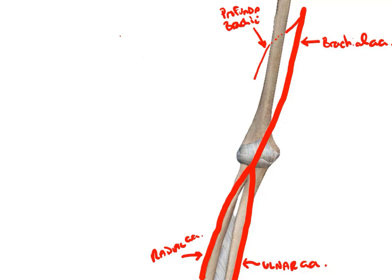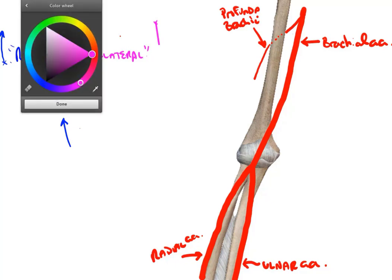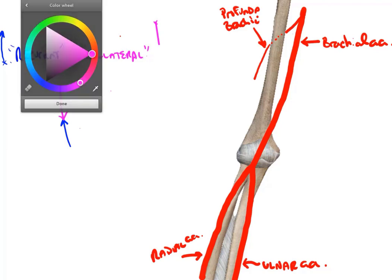You need to know two key terms. 'Collateral' refers to arteries starting up high that work their way down. 'Recurrent' refers to arteries starting from below that work their way up. Where the recurrent artery goes up, it meets the collateral coming down — that meeting point is called an anastomosis, and this is what forms the collateral circulation.